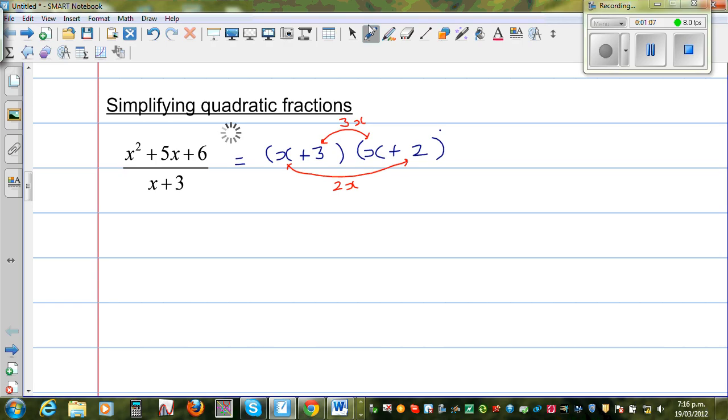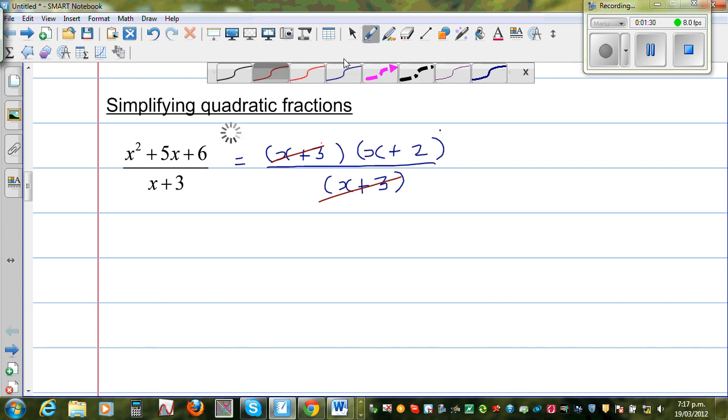So we are right. So x plus 3 times x plus 2 is the right factorization of the numerator. So the denominator is nothing but x plus 3. You can't do anything. You cannot simplify that any further. So you've got x plus 3 and x plus 3 in the numerator and denominator. And they can be cancelled. So the answer, the simplified form is nothing but x plus 2. Just like that.